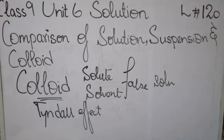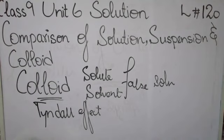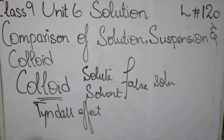The key feature of all colloids is that the particle size is very big, and when a beam of light hits them it scatters and cannot pass through — which we call the Tyndall effect. To differentiate: there is a Tyndall effect in colloidal solution while there is no Tyndall effect in a simple true solution. Colloidal solutions are called false solutions. In a colloidal solution, solute particles are big enough to scatter light, while in a true solution they are not.